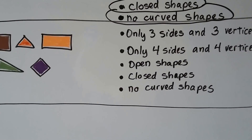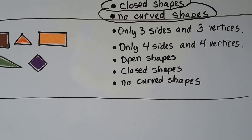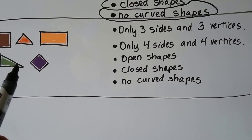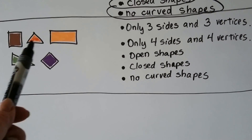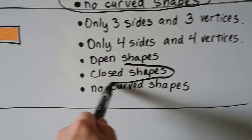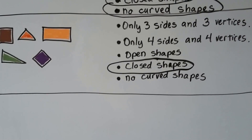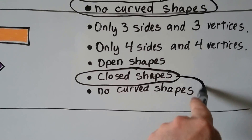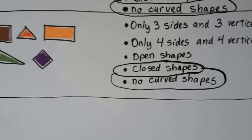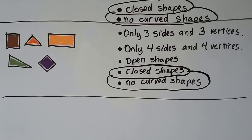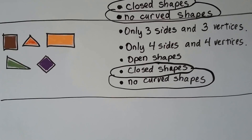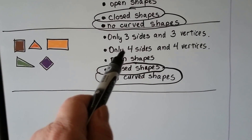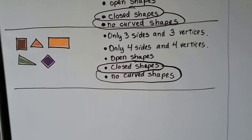Now what about the third group? She has four sides and three sides together. They are closed — none of them are open. Do any of them have curves? No, they all have vertices and straight lines with corners. So the sorting rule for this group is: closed shapes and no curved shapes.